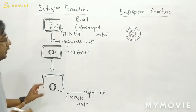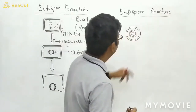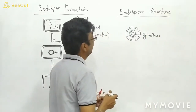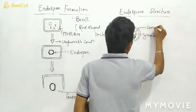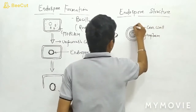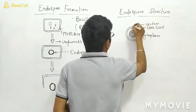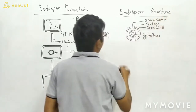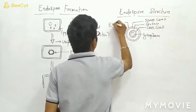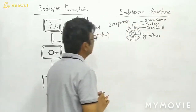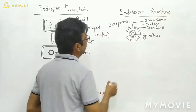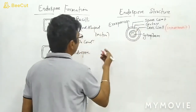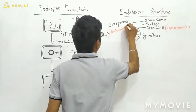Now we will see the endospore structure, which is very important from the examination point of view. This is the cytoplasm. The first layer of the endospore is the core wall. The second is the cortex. The third is the spore coat. And the fourth is the exosporium. So the innermost layer is the core wall, and the exosporium is the outermost layer.